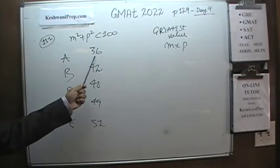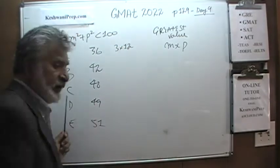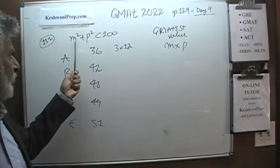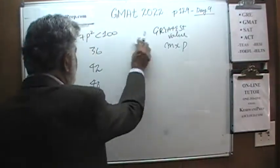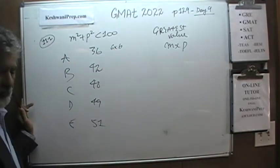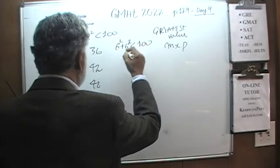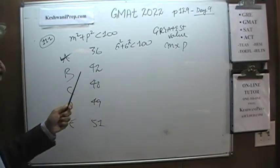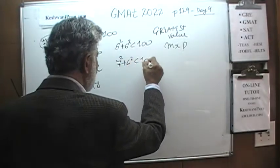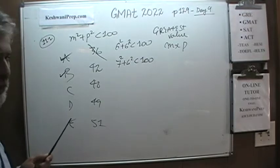Neither P nor M can be a two-digit number, because 12 squared alone is more than 100. Since M squared plus P squared must be less than 100, both M and P must be one-digit numbers. For example, 6 and 6 would work — 6 squared plus 6 squared is less than 100, giving M times P equals 36. But 7 times 6 also works: 7 squared plus 6 squared is less than 100, giving a product of 42, so 36 is no longer a contender.